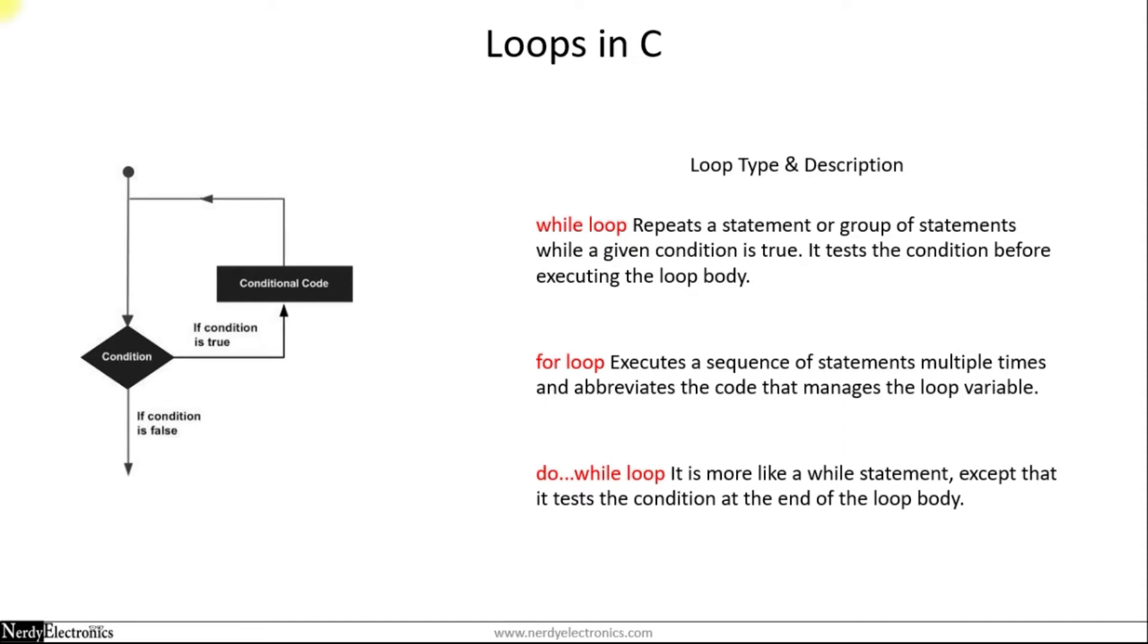In C, there are three types of loops: the while loop, the for loop, and the do while loop.